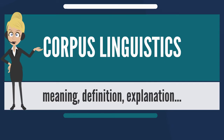For Contemporary American English, work has stalled on the American National Corpus, but the 400-plus-million-word Corpus of Contemporary American English (1990–present) is now available through a web interface.